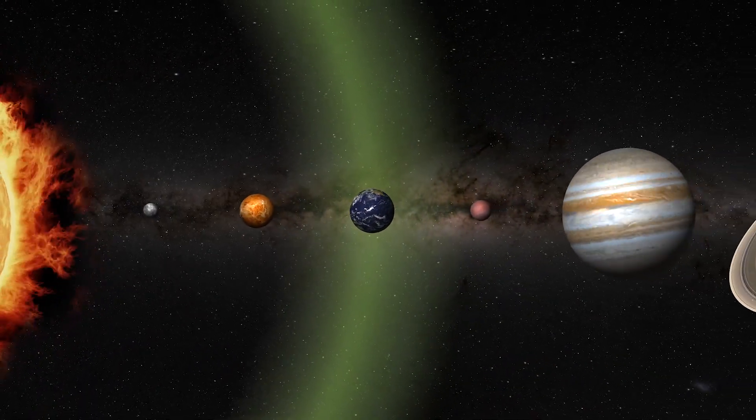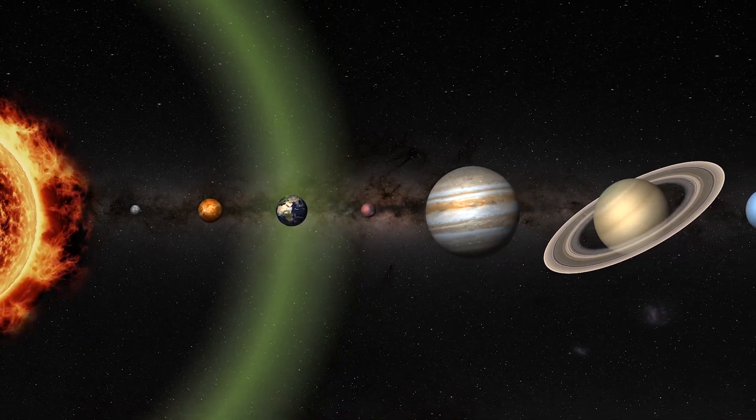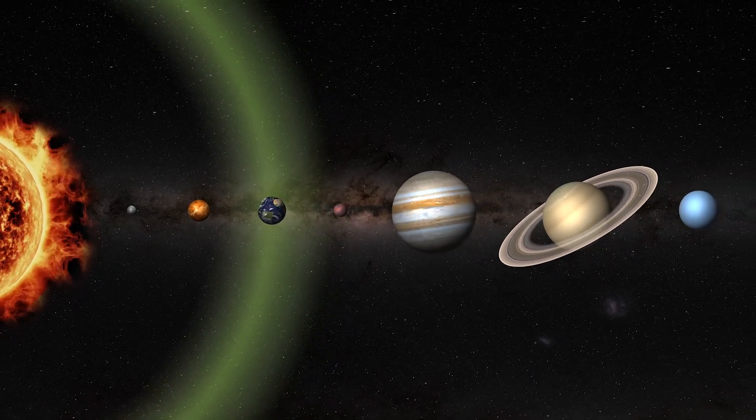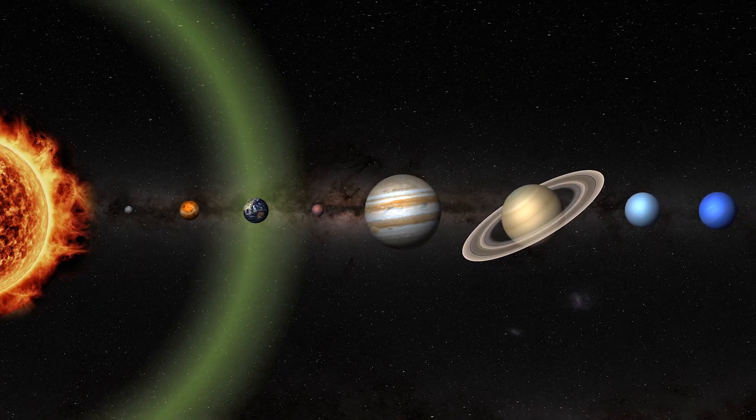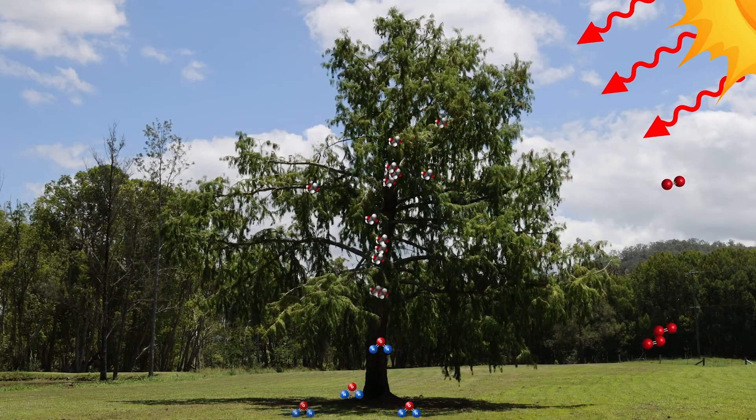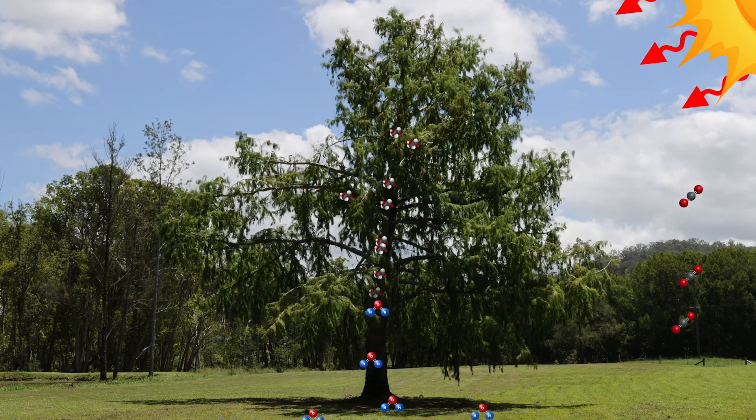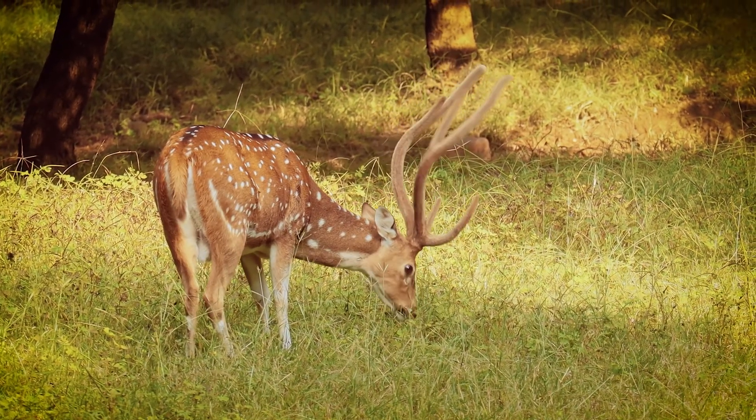Being situated in this zone is critical for maintaining temperatures suitable for life, but also for providing the right conditions for photosynthesis. Photosynthesis is the fundamental process by which plants convert light energy from the Sun into chemical energy, which then becomes the backbone of ecosystems on Earth.